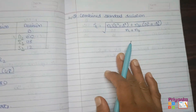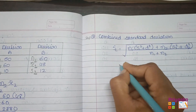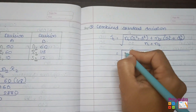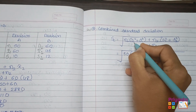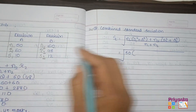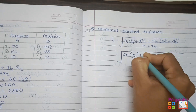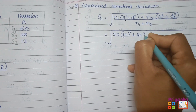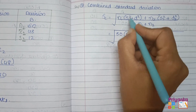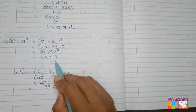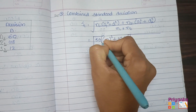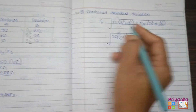Now we apply the combined standard deviation formula, which is quite long. Under the square root, we keep n1 = 50, then s1² + d1². Since d1² = 42.90 is already squared, we keep it directly — do not square it again. Then add the bracket for n2 = 60.